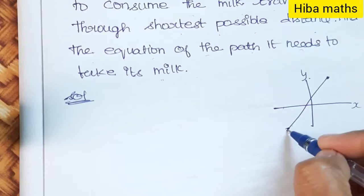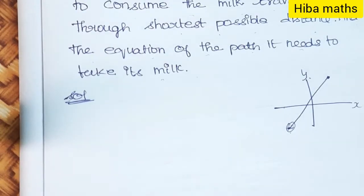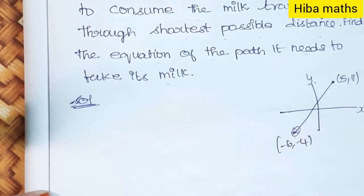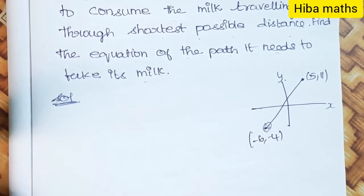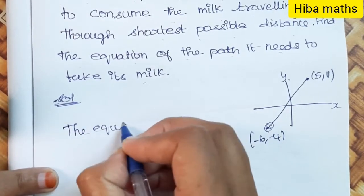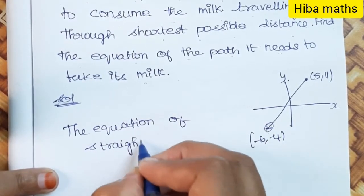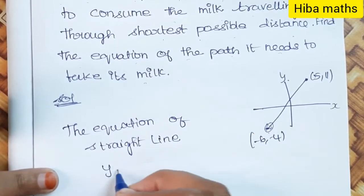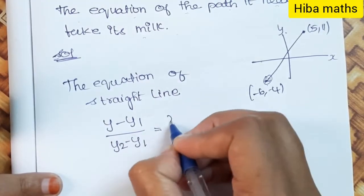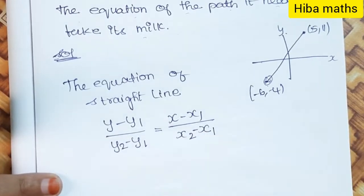The cat has milk — the cat can consume the milk. What is the shortest distance? This is the equation. We have two points, so we use the two-point formula. The equation is very easy. The equation of a straight line through two points is: Y minus y1 divided by y2 minus y1 equals x minus x1 divided by x2 minus x1.